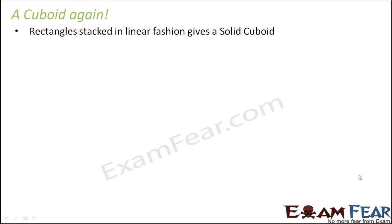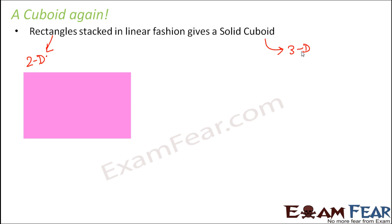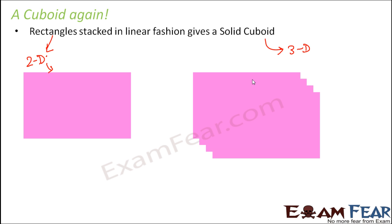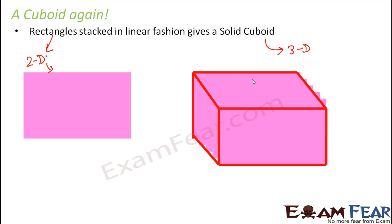Similarly, take the example of a cuboid. A cuboid is three-dimensional, and it is actually formed from two-dimensional rectangles. Rectangles are two-dimensional shapes with length and breadth, while a cuboid is a three-dimensional shape with length, breadth, and height. If you stack rectangles one after another — just imagine a sheet of paper cut in the shape of a rectangle — you keep placing more and more rectangles, and you end up getting a solid cuboid, building the third dimension which is the height.